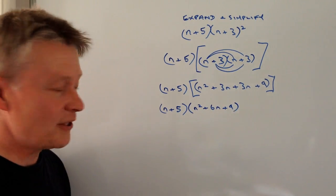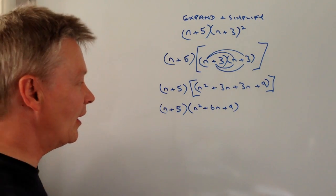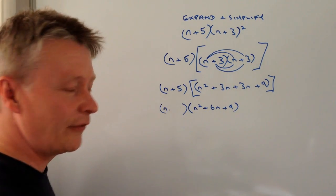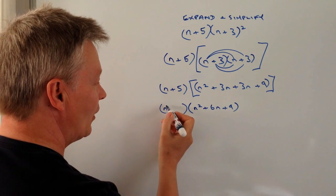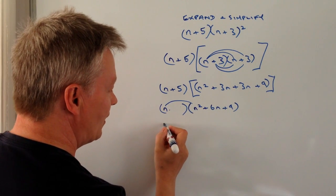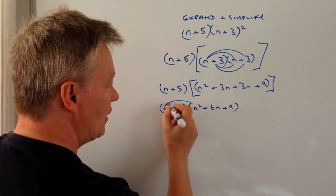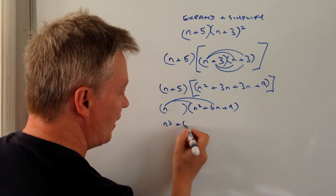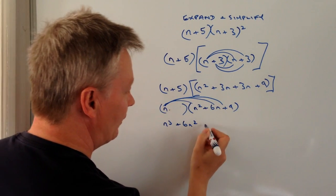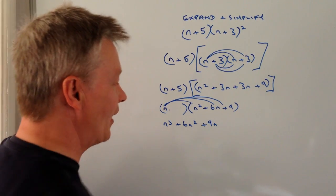Now I need to expand these out. The way I'm going to do that is I'm going to ignore this plus 5 for the moment. And what I'll end up with is n times n squared is n cubed plus 6n squared plus 9n.